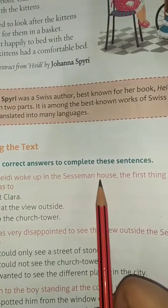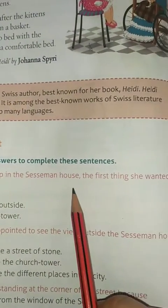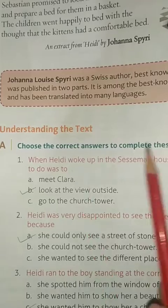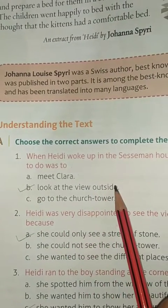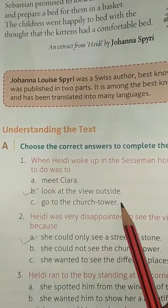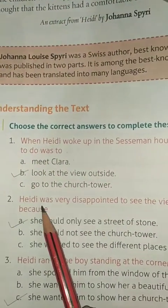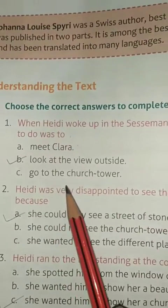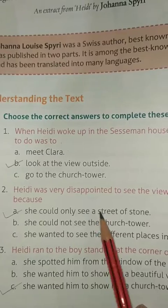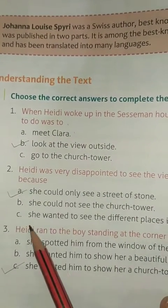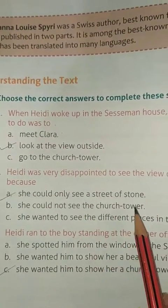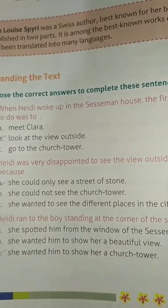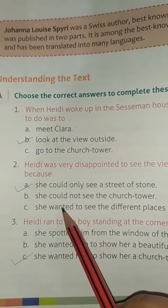When Heidi woke up in the assessment house, the first thing she wanted to do was — go to the church tower. So B is correct. Next: Heidi was very disappointed to see the view outside the assessment house because she could only see a street of stone. So the correct answer is A.